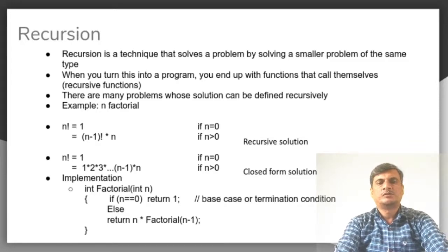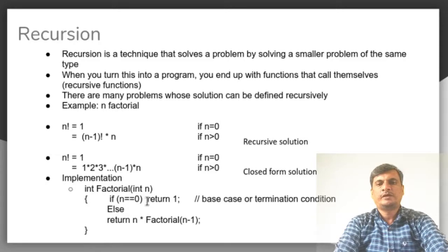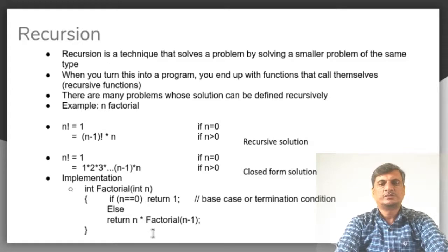The most classical example for recursion is the factorial. Factorial can be either recursive or non-recursive in nature. If n equals 0, we need to define where this function is going to end when it calls itself — at some point it has to terminate. We call such a termination condition the base case. If it is not the base case, we simplify the problem into a smaller version of its own.